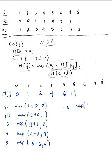For j equals 6, I compute the max of: V of 6 is 6, plus M of p(6) — p(6) is 3, so M of 3 = 4, giving 10 — or M of 5, which is 11. The max is 11, so we can see that interval 6 will not be included in the optimal solution for intervals 1 through 6. For j equals 7, max of: V of 7 plus M of p(7) — p(7) is 1, M of 1 = 1 — or M of 6, which is 11. That gives M of 7 = 11.